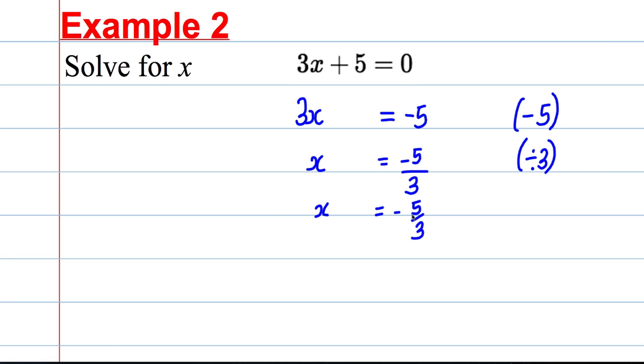Now students would like to decimalise that and they would get, if they did this and you shouldn't really write this down, they would get negative 1.6 recurring. It's nicer to leave your answer as a fraction like this as it is accurate. Do not write whatever you do, negative 1.6 unless you are told to give your answer to a certain number of decimal places. Again, let's check our work. 3 multiplied by negative 5 over 3, the 3s would cancel and we get negative 5. Negative 5 plus 5 is equal to zero. I know I've done it right.